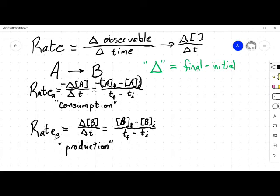And another thing that we really need to think about here is, are these rates independent of each other? And I think we can pretty clearly say no, they're not, because for every A that's consumed, a B is formed.